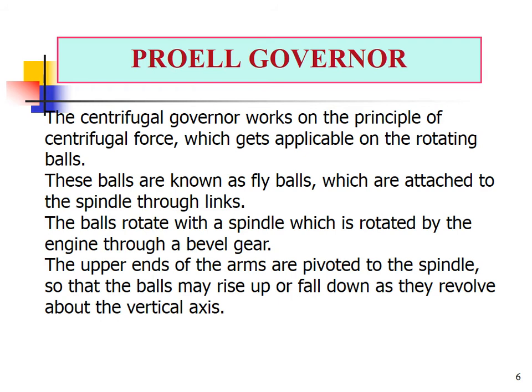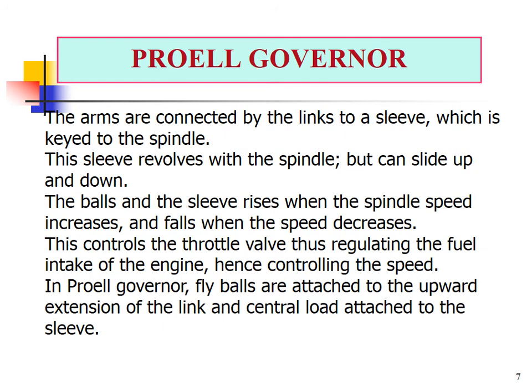The upper ends of the arms are pivoted to the spindle so that the balls may rise up or fall down as they revolve about the vertical axis. The arms are connected by links to a sleeve, which is keyed to the spindle. The sleeve revolves with the spindle but can slide up and down. The sleeve rises when spindle speed increases and falls when speed decreases, controlling the throttle valve and regulating fuel intake to control speed.